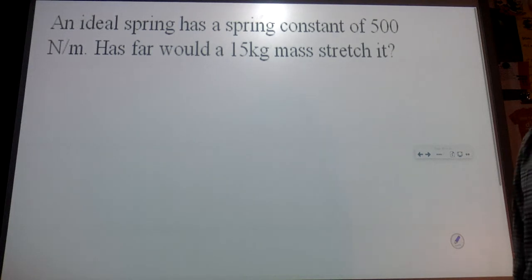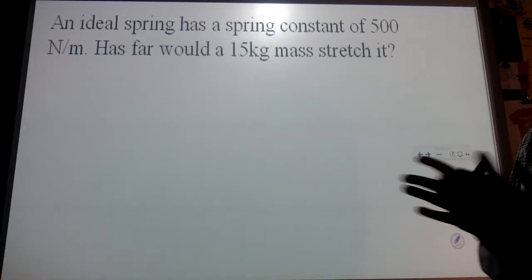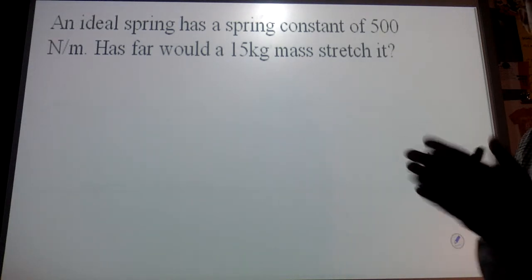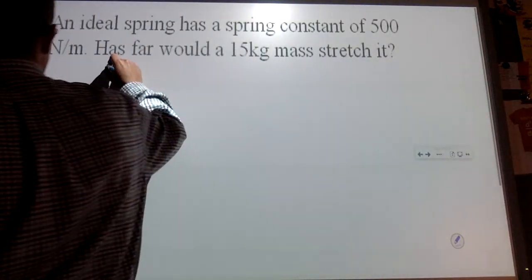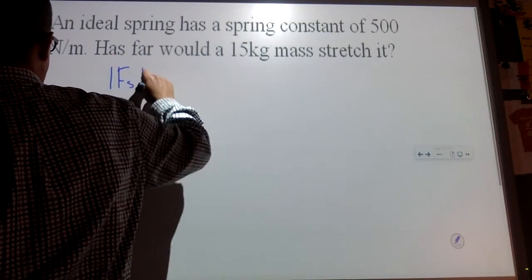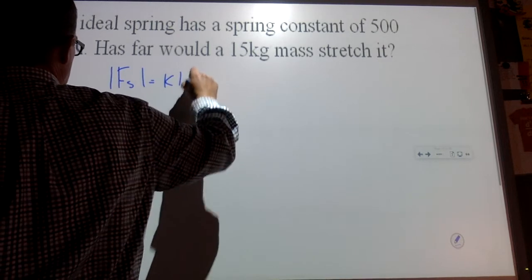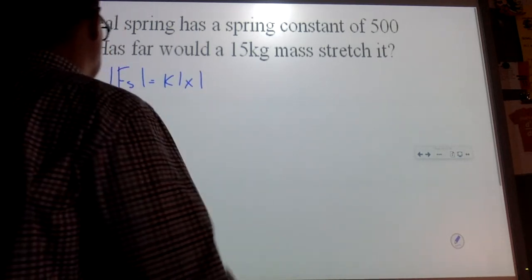An ideal spring has a spring constant of 500 newtons per meter. How far would a 15 kilogram mass stretch it? Again, looking at our formula. This is on your equation sheet. And it will show up as the year goes through.